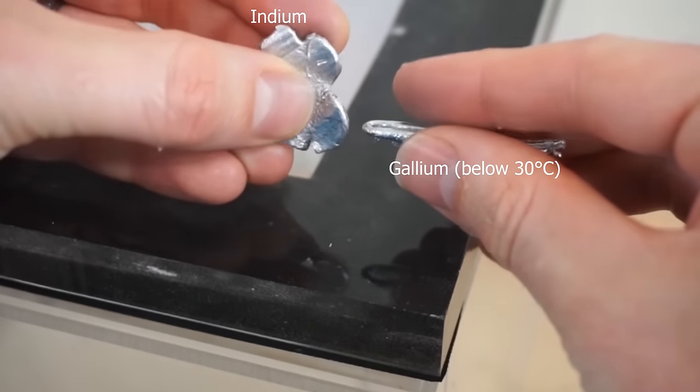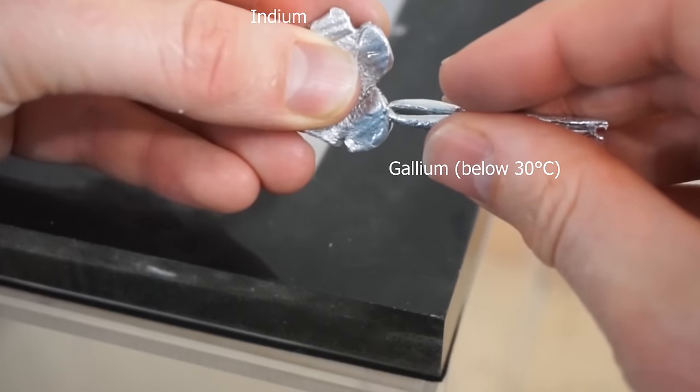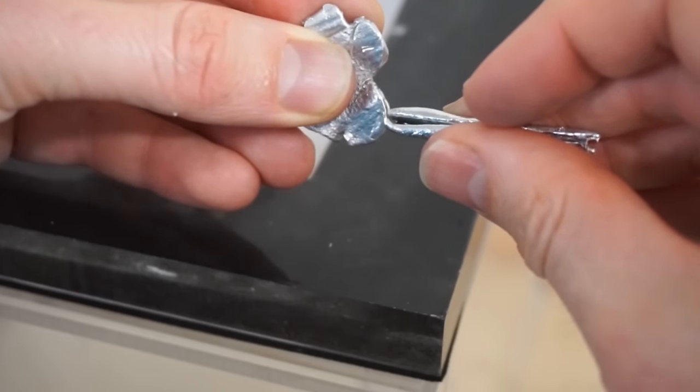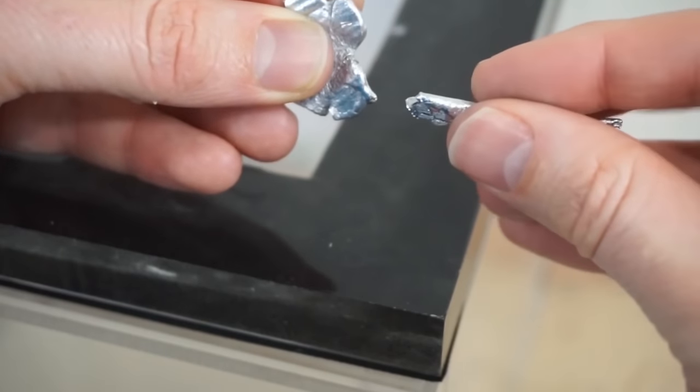For example, when you mix gallium with indium it forms an alloy that is more like mercury because it has a much lower melting point. So you can see what happens when I mix gallium with indium. If I just touch them together it starts to melt.